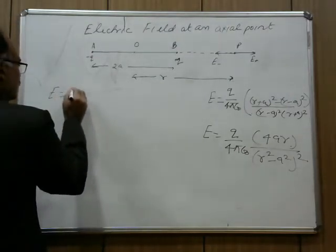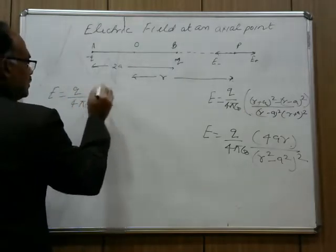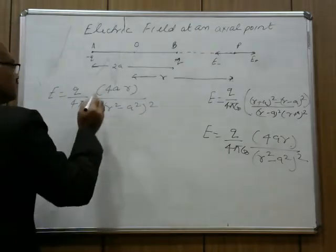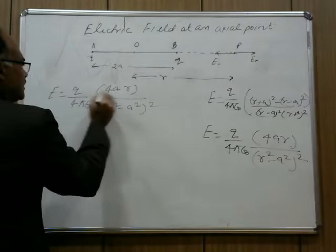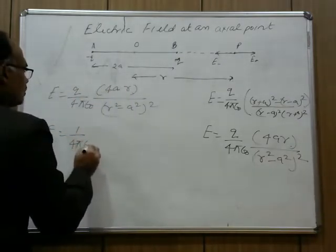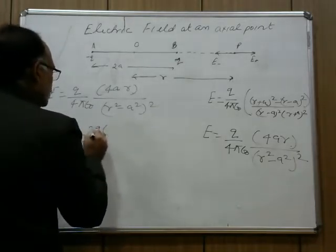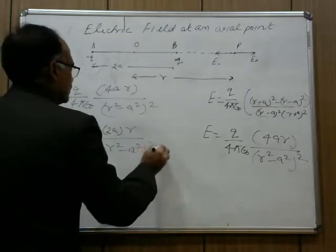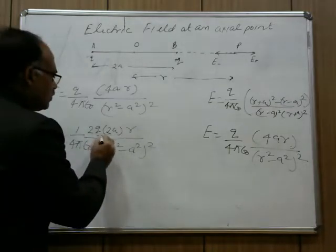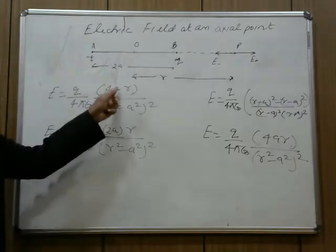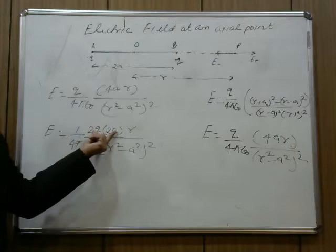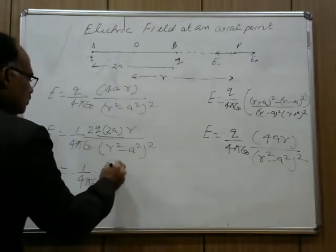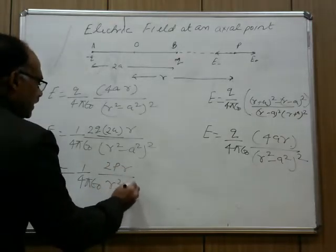So E equals q upon 4 pi epsilon naught times 4ar upon (r squared minus a squared) whole squared. Rewriting: this becomes 1 upon 4 pi epsilon naught times 2 times (q times 2a) times r upon (r squared minus a squared) whole squared. The quantity q times 2a is the dipole moment p, so we can write this expression in terms of dipole moment as 1 upon 4 pi epsilon naught times 2pr upon (r squared minus a squared) whole squared.